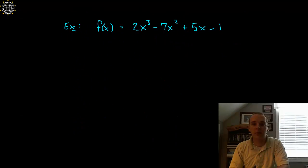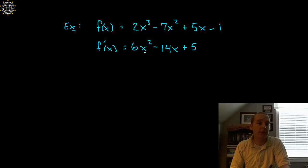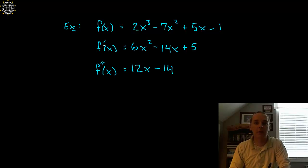Let's try one quickly. Here's f: two x cubed minus seven x squared plus five x minus one. F prime using basic derivative rules would be six x squared minus fourteen x plus five. That's a new function, so if we wanted to take f double prime it would be twelve x minus fourteen — simply the derivative of the derivative.